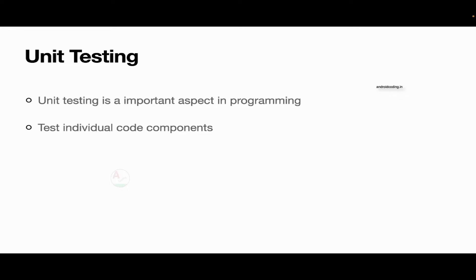You can test this particular code component and verify whether it is working according to the requirement or not. This is just a small example. In real-time scenarios when you are developing real-world applications, there are several code components which have their own functionality. It will be very critical for you to handle and test all these functionalities every time you provide a live build. Unit testing makes it easy for you to verify them. Verifying the working status of each and every code component every time is not possible.